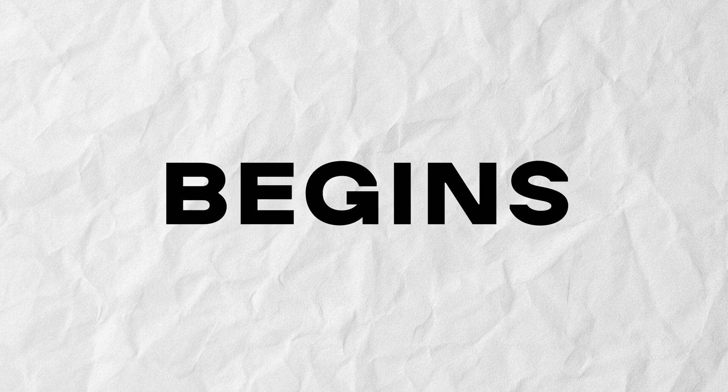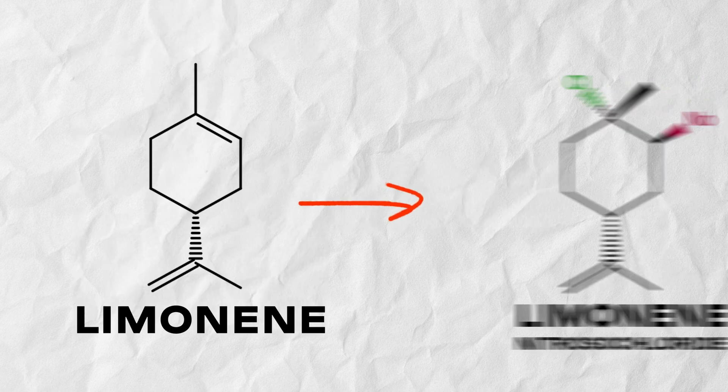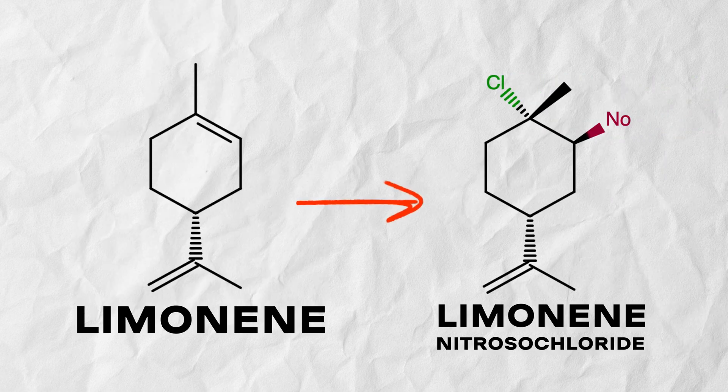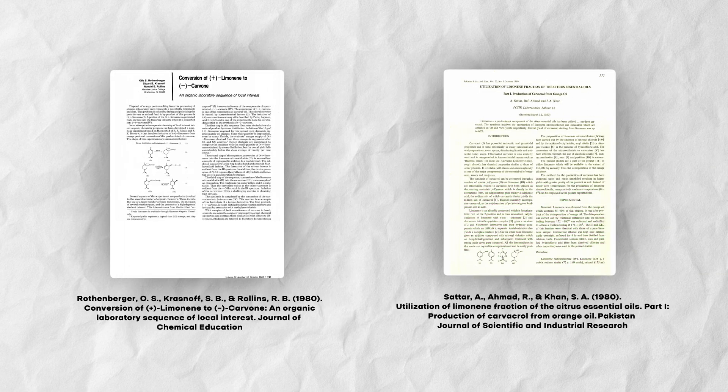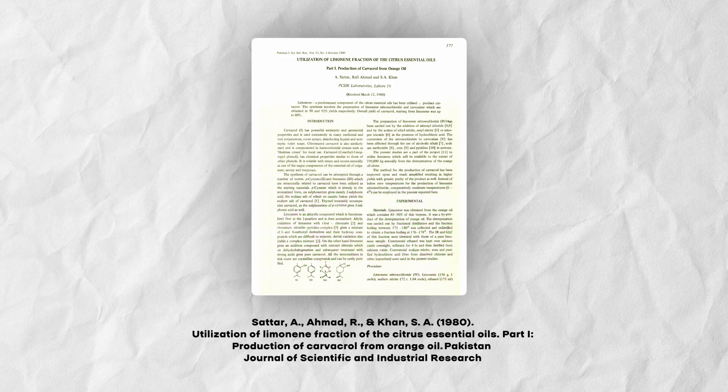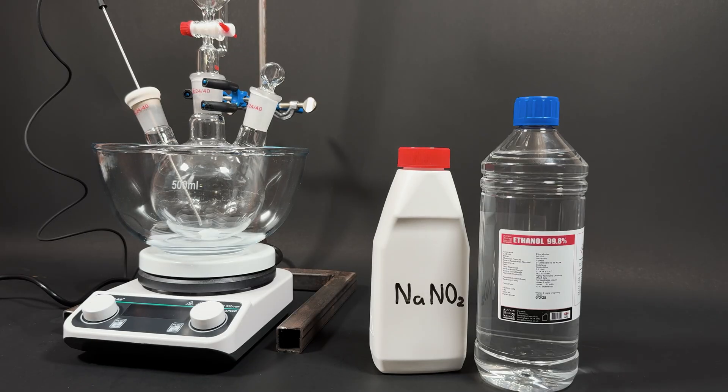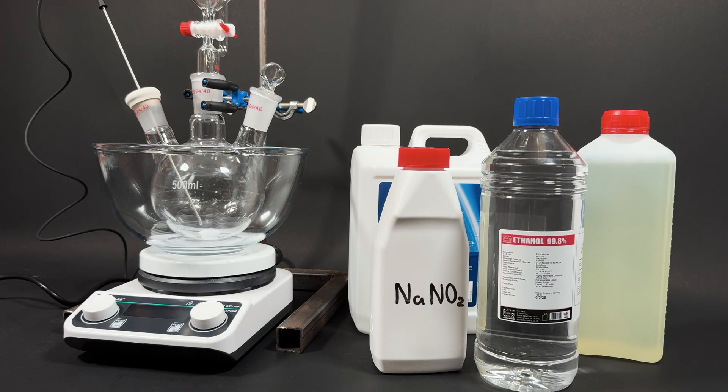Okay, now the real chemistry begins. We need to turn this molecule into this one. I found two good methods, an American and a Pakistani one. I think the second is simpler and gives a better yield. For this reaction we need a reactor, sodium nitrite, pure ethanol, distilled water, concentrated hydrochloric acid, and our limonene.